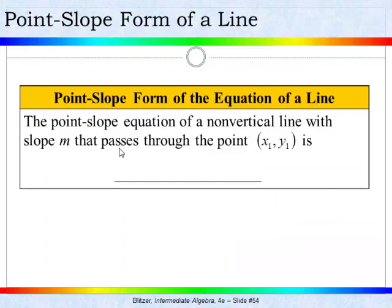Let's start by taking a look at the point-slope form of the equation of a line. The point-slope equation of a non-vertical line with slope m that passes through the point x1, y1 is y minus y1 equals m times x minus x1.